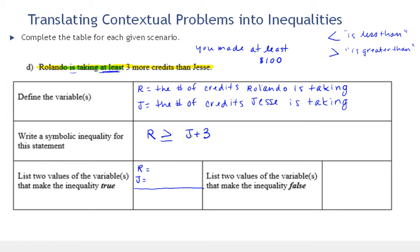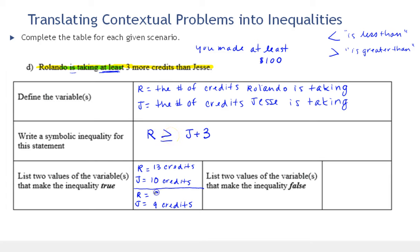Now let's list two values that make the inequality true. I'll pick a value for Jesse and then a value for Rolando that satisfies the right-hand side. If Jesse is taking ten credits, then Rolando must be greater than or equal to ten plus three — let's make it equal, so Rolando takes thirteen credits. For another example, let Jesse take nine credits; nine plus three is twelve, so Rolando's credits must be at least twelve — let's give him eighteen credits.